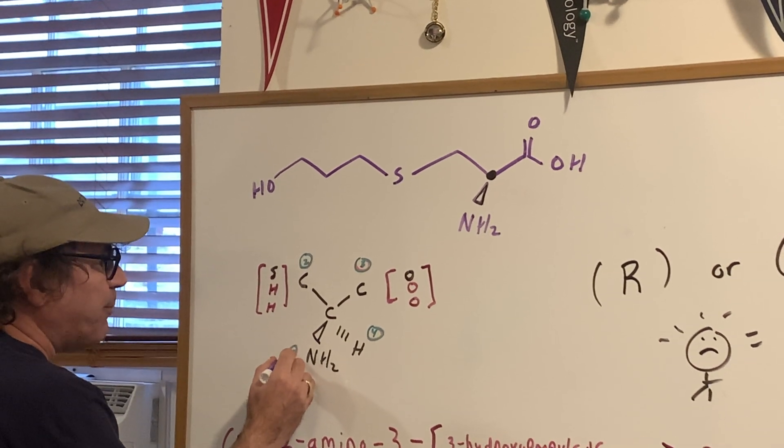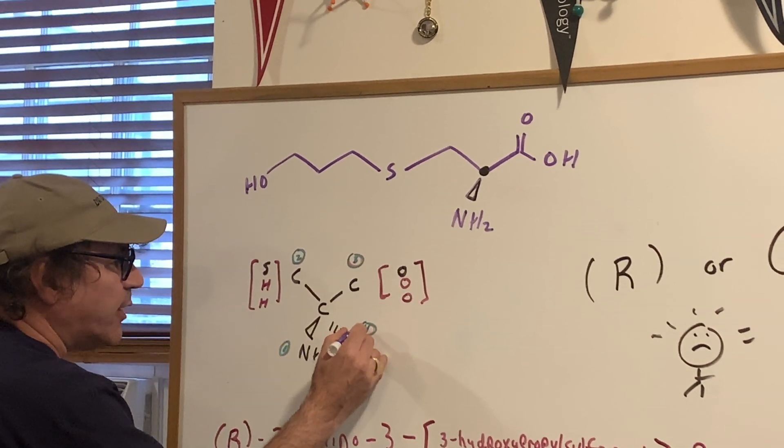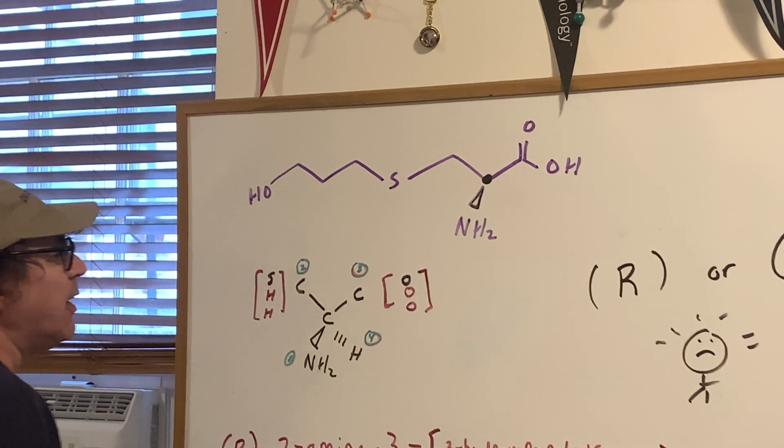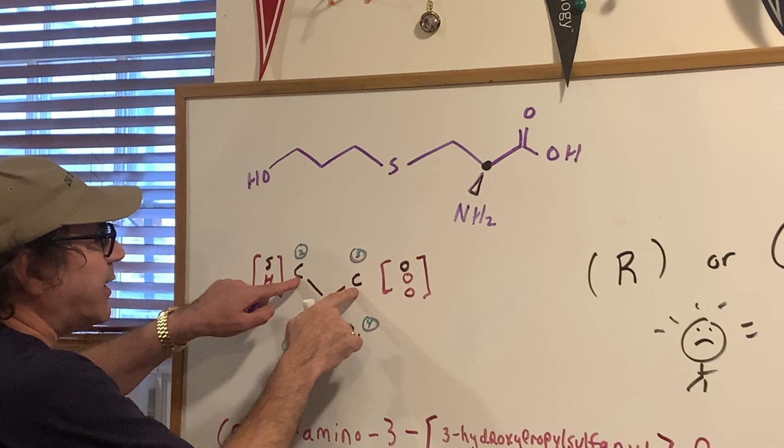Now, we all know that nitrogen beats carbons. So that's one and hydrogen is four. Since number four is a dash, we're in the proper position. Now, the question is, what happens in the case of a tie?